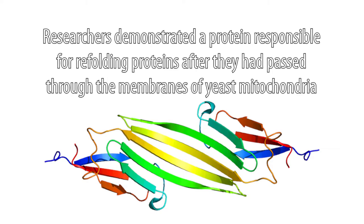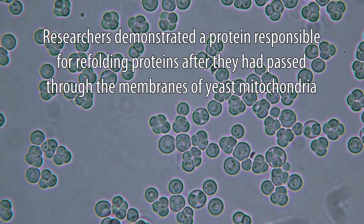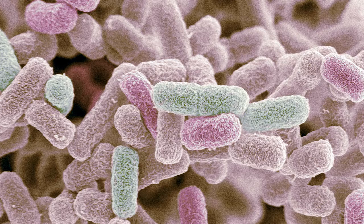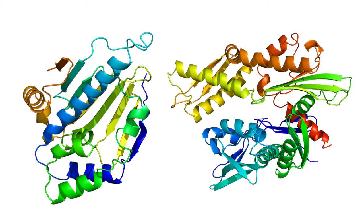In the late 1980s, researchers in Germany and the United States demonstrated a protein that assisted the refolding process of proteins that had crossed into the mitochondria of yeast cells. The team also found a similar protein in E. coli and determined its 3D conformation.